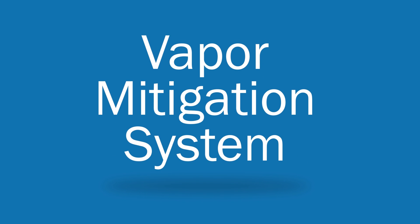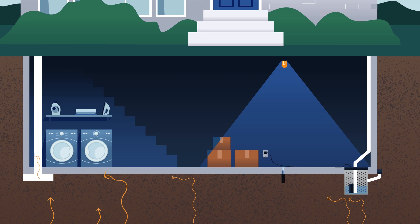If something is found, a vapor mitigation system can be installed to fix it. This is a series of pipes and fans that keeps vapors from entering your home by moving them up out of the ground.